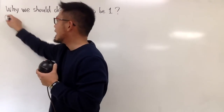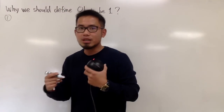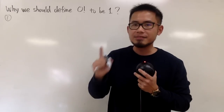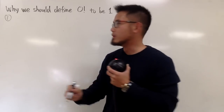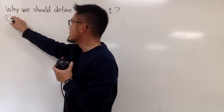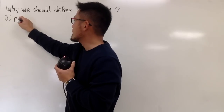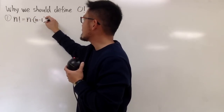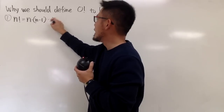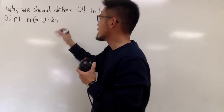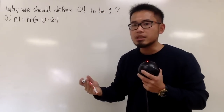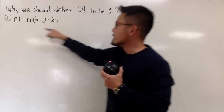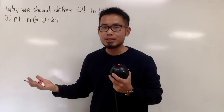For the first reason, I'll use the usual definition of n factorial when n is a positive whole number. As we all know, n factorial is equal to n times n minus 1 times n minus 2, and so on, until we reach 2 times 1. Based on this definition, if you plug in 0, it wouldn't make sense.